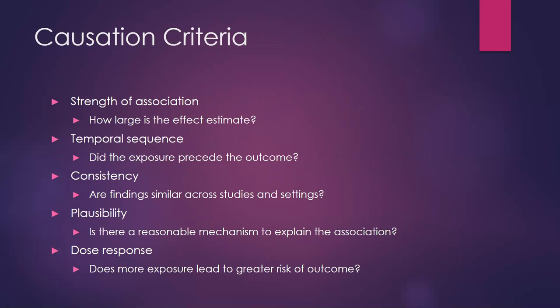Thinking about how large the association is can encourage faster action and also helps when thinking about bias. For example, with dual users being eight times more likely to have an amputation: even if we didn't perfectly account for all confounding variables, it's unlikely that hazard ratio would come all the way down to one. A really large relative risk — something very far from one — indicates a stronger association and gives more confidence in saying the relationship is causal, assuming the other pieces are in place.